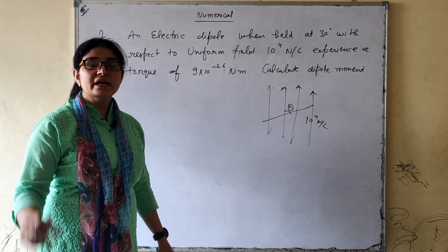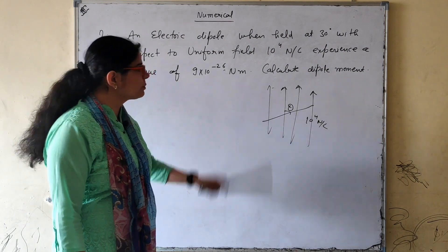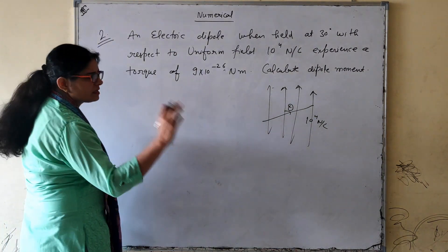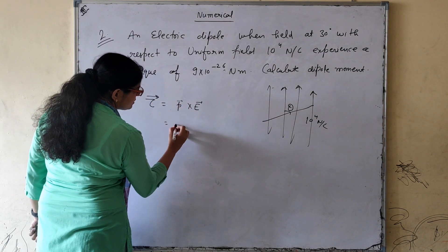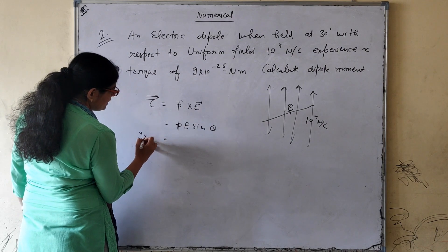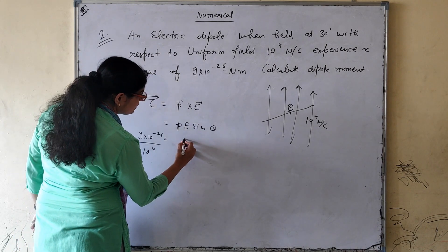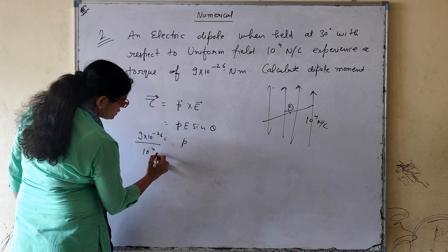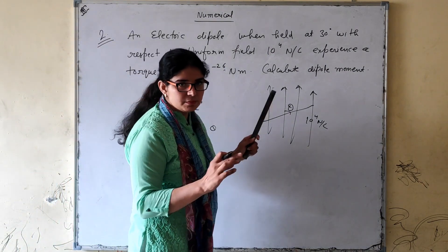We need to calculate the dipole moment p. Simple: our torque formula is τ = p × E = pE sinθ. Here τ = 9 × 10⁻²⁶, E = 10⁴, and sinθ = sin 30° = 1/2 = 0.5. Just put 0.5 here and solve for p — you will get the value of p directly. Very simple question.